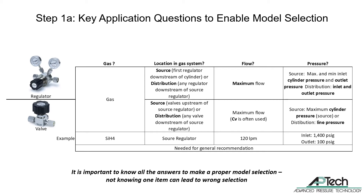A valve is a source application if between the cylinder or bulk gas storage system and the first regulator — in other words, if it is upstream of the source regulator. Distribution is any valve after or downstream of the first regulator. Often an application requirement will be specified as a required CV or flow coefficient, such as 0.5 CV. CV can also be used to select proper valve sizes, but should not be used for regulator selection.